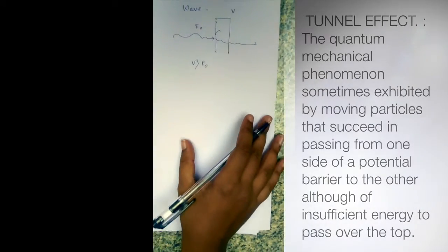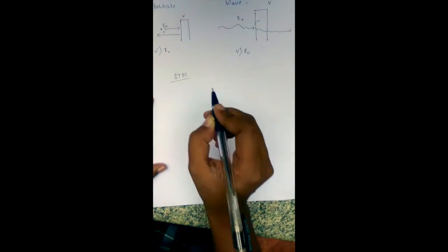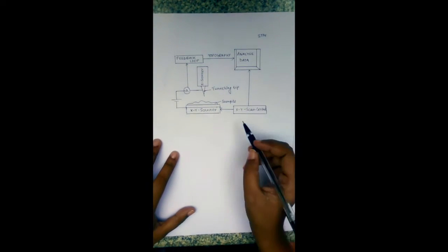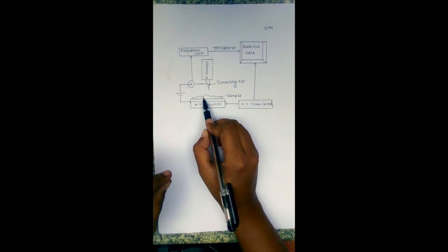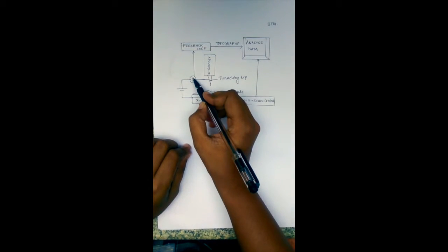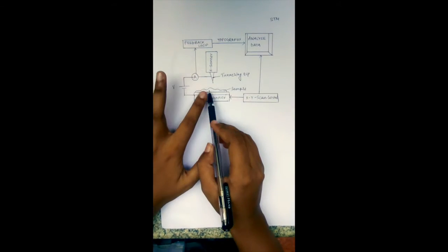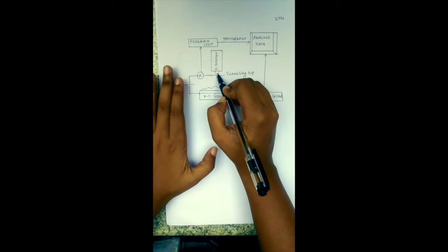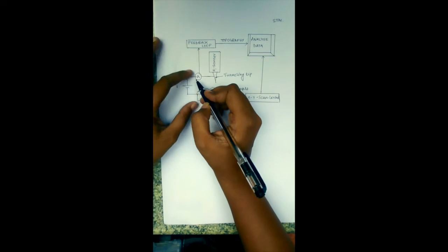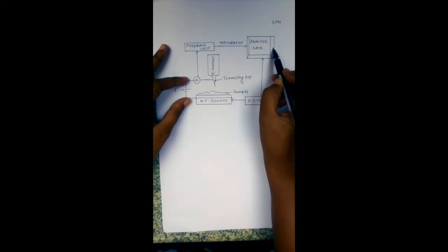This is the tunneling effect, and we are going to focus on the tunneling effect in the STM. The scanning tunneling microscope consists of a tunneling tip and the sample. The sample must have a conducting surface through which the electron can tunnel. A potential difference V is applied across the tunneling tip and the sample, so that the tunneling tip can be brought close to the sample and electrons can tunnel through. This creates a current which is detected through the feedback loop and topography to analyze the final data.